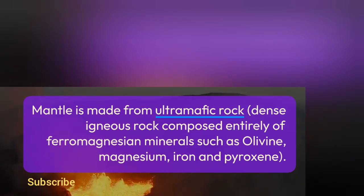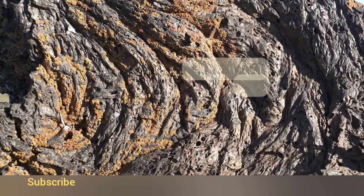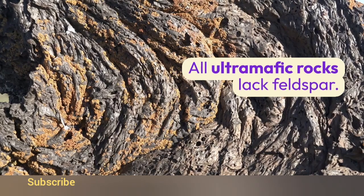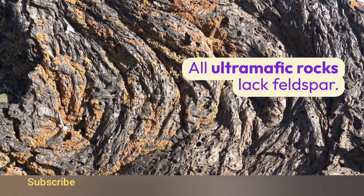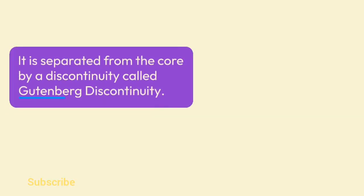The mantle is composed entirely of ferromagnesian minerals such as olivine, magnesium, iron, and pyroxene. All ultramafic rocks lack feldspar. The mantle is separated from the core by a discontinuity called the Gutenberg discontinuity.